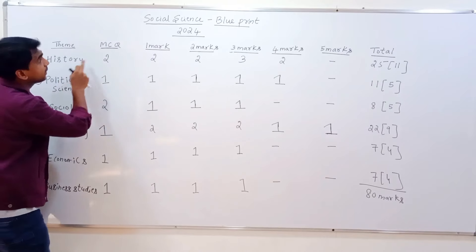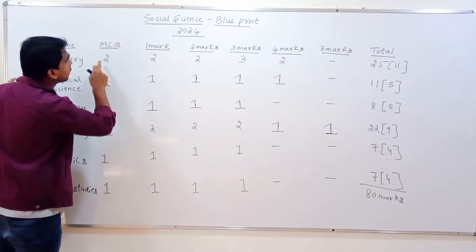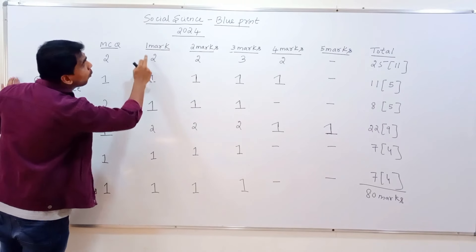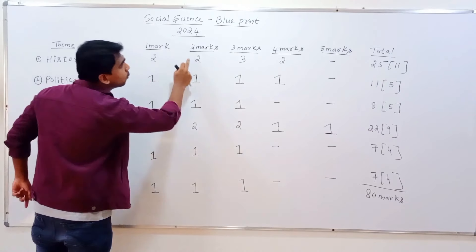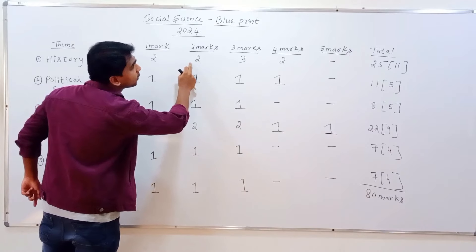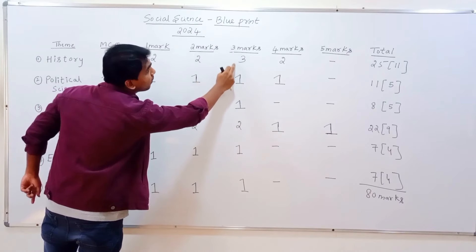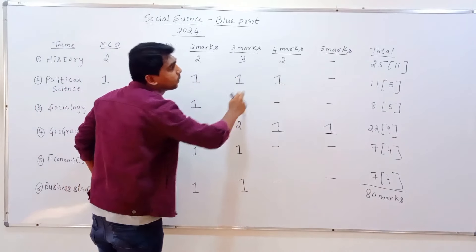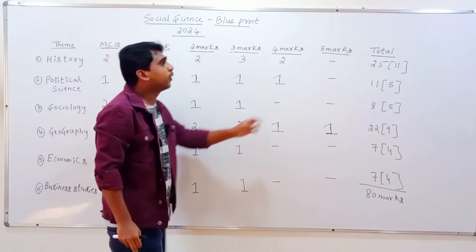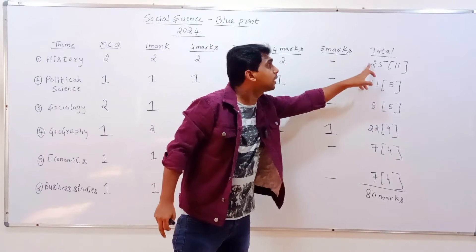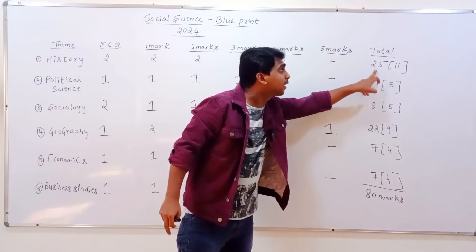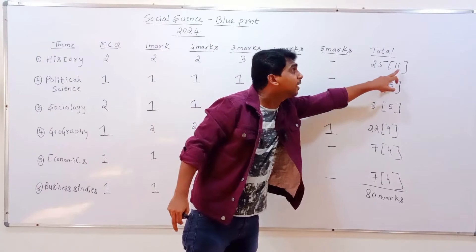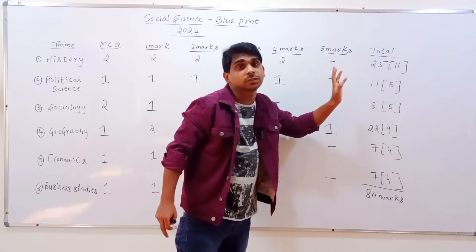First one is History. History has multiple choice — two questions. One mark is two questions, two mark is two questions, three mark is three questions, four mark is two questions. Five mark is not included. Total mark is 25 marks. History has 11 yes questions in total.